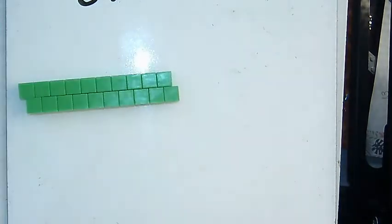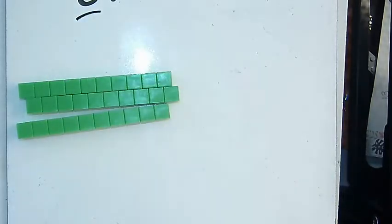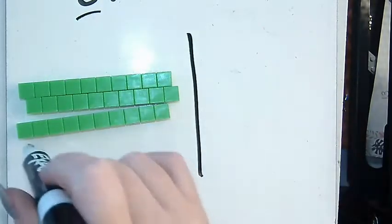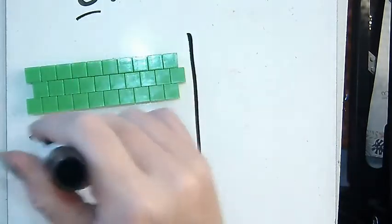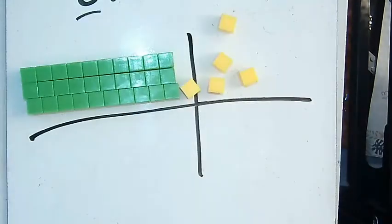what I do is build my first number: 3 tens and 7 ones. I like to split them up to keep my tens and ones separate. One, two, three, four, five, six, seven.